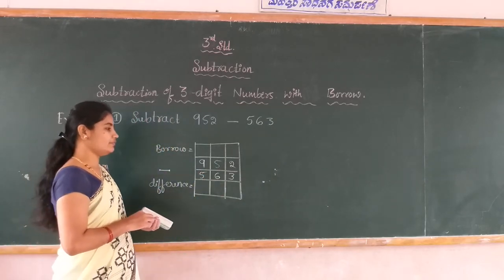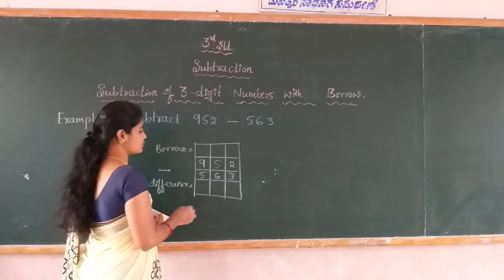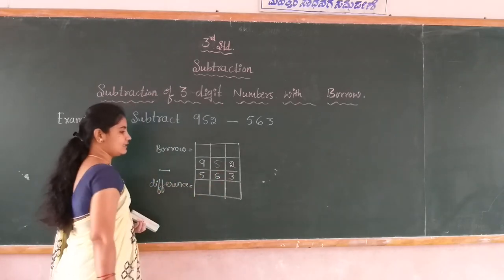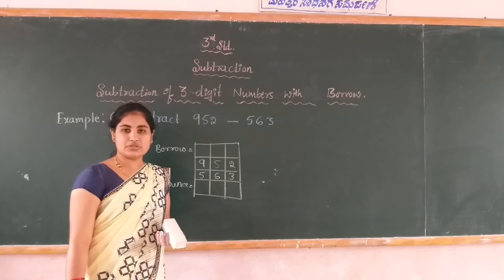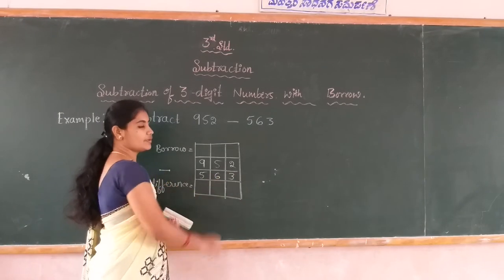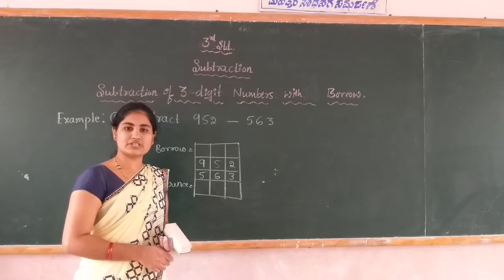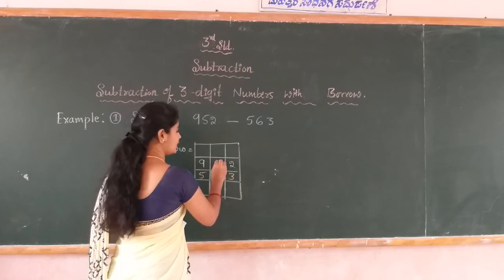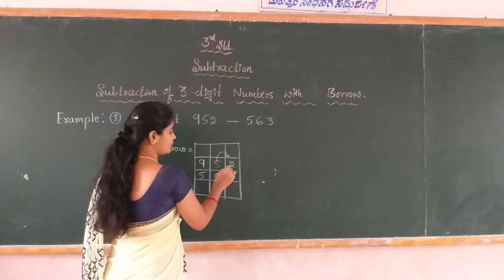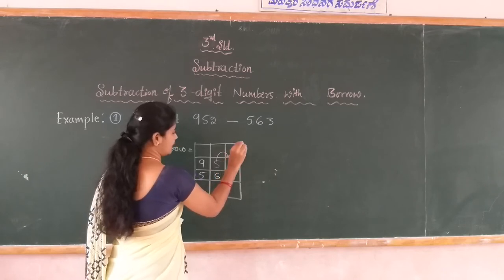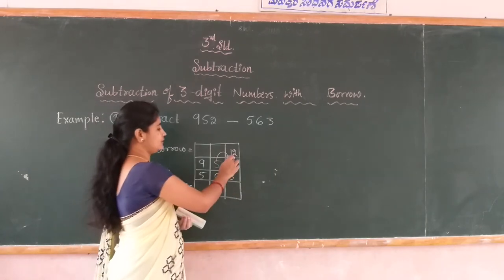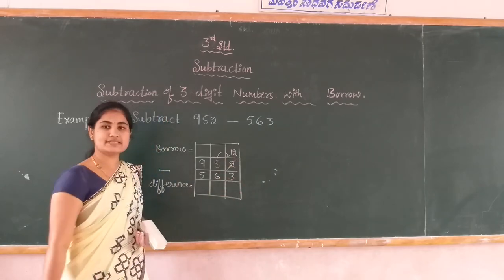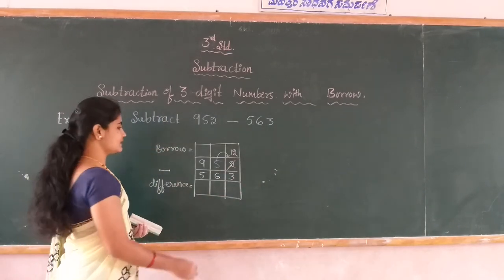You start the subtraction from the ones place: 2 minus 3 is not possible because 2 is less than 3. So you take borrow from 5; then 2 becomes 12. Now 12 minus 3 is possible because 12 is bigger than 3.